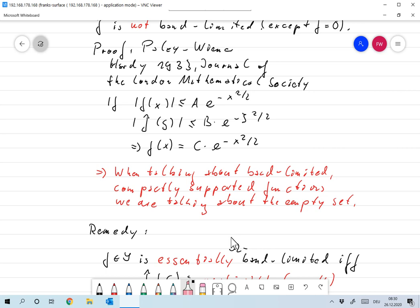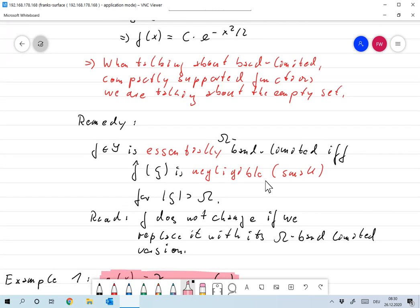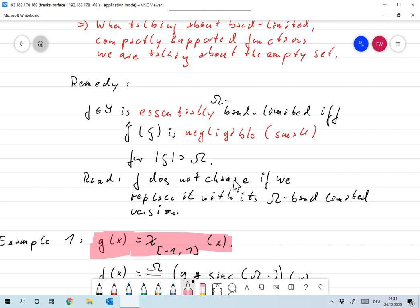So that doesn't make sense. So we escape to a slightly different definition, and that's even in parentheses. We call the function f in S essentially omega band-limited if f̂ is negligible or small for |ξ| larger than omega. I accept that this is a very weak definition—it's not even a definition—but in practice it's extremely useful.